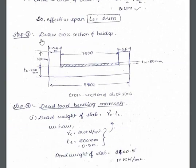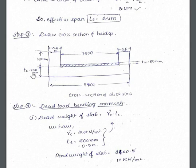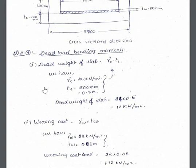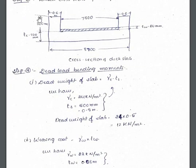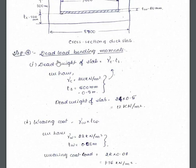Step 3: draw the cross-section with all values obtained. The clear carriageway is 7.5 m wide, curbs are 0.6 m wide each, giving a total width of 8.7 m. Thickness of wearing coat is 80 mm as given, and thickness of slab TS = 500 mm.